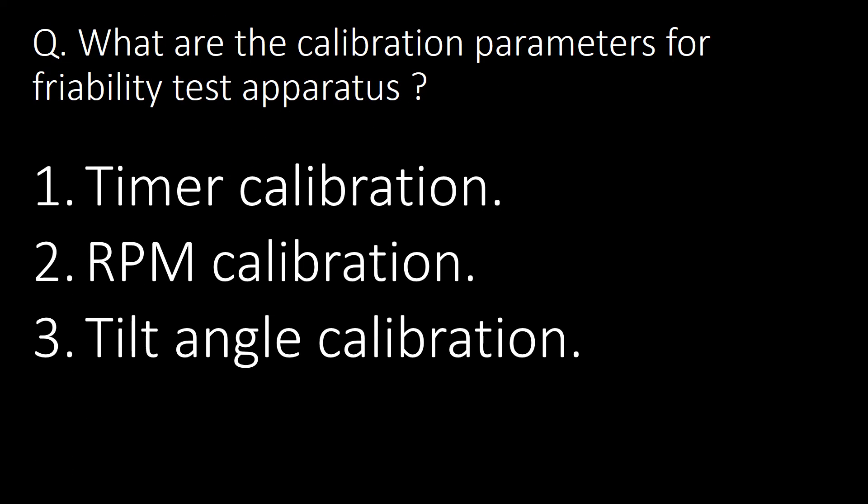What are the calibration parameters for the friability test apparatus? Following are the 3 important parameters that should be calibrated: first, timer calibration; second, RPM calibration; and third, tilt angle calibration.